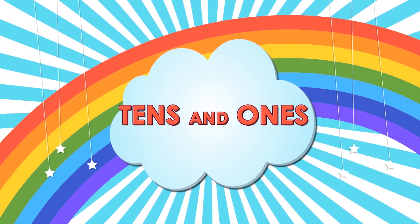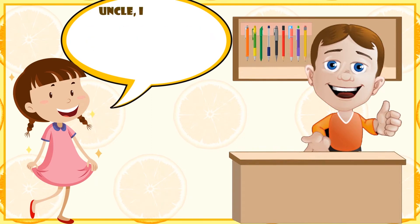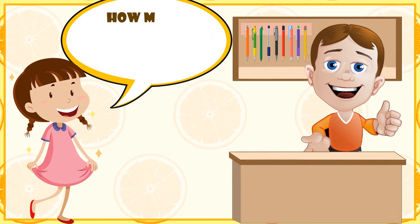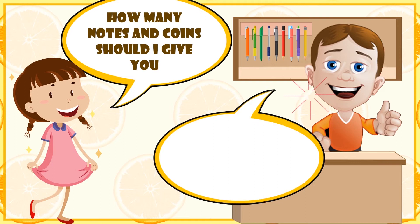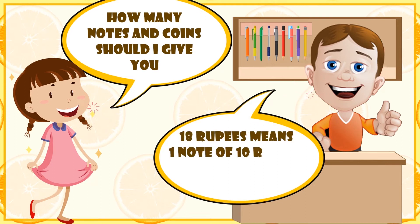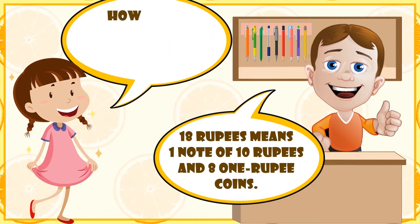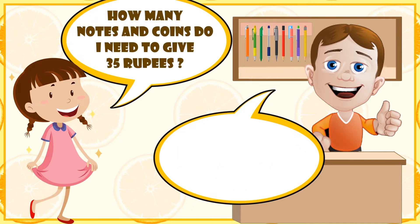Tens and ones. Help me uncle, I want to buy pencils for 18 rupees. I have just 10 rupee notes and 1 rupee coins. How many notes and coins should I give you uncle? 18 rupees means one note of 10 rupees and 8 one-rupee coins.